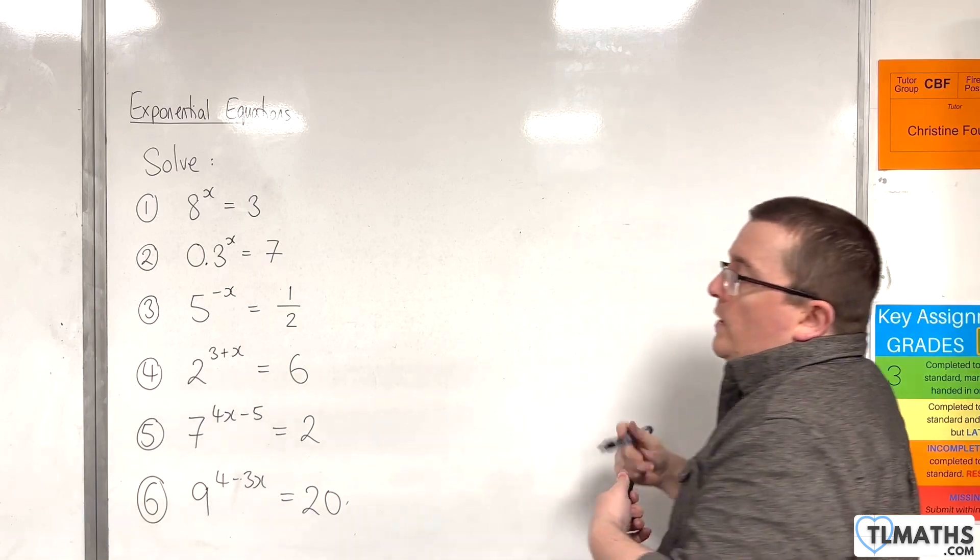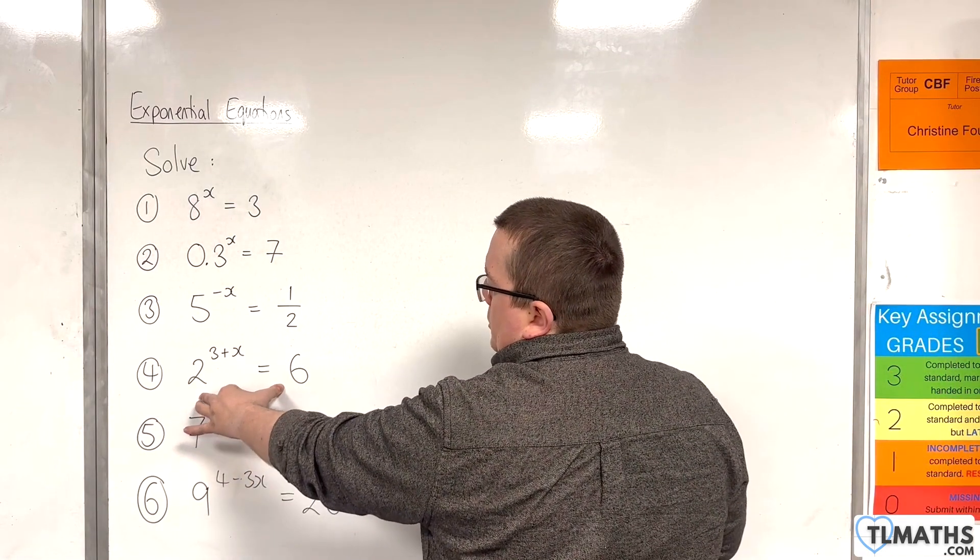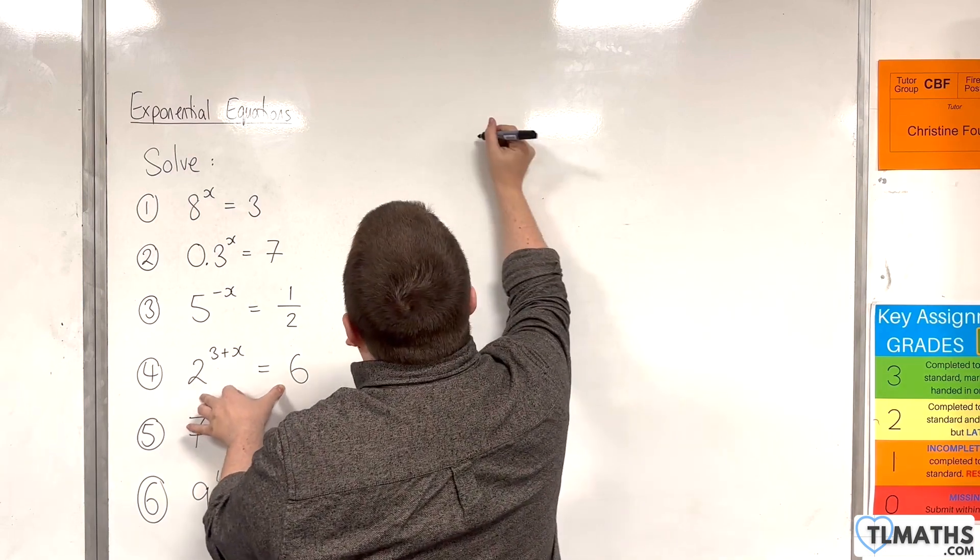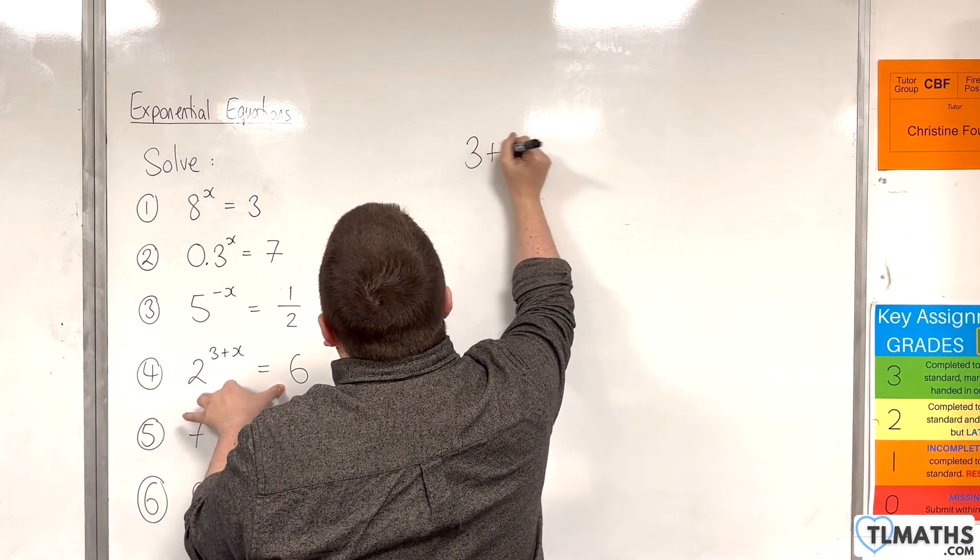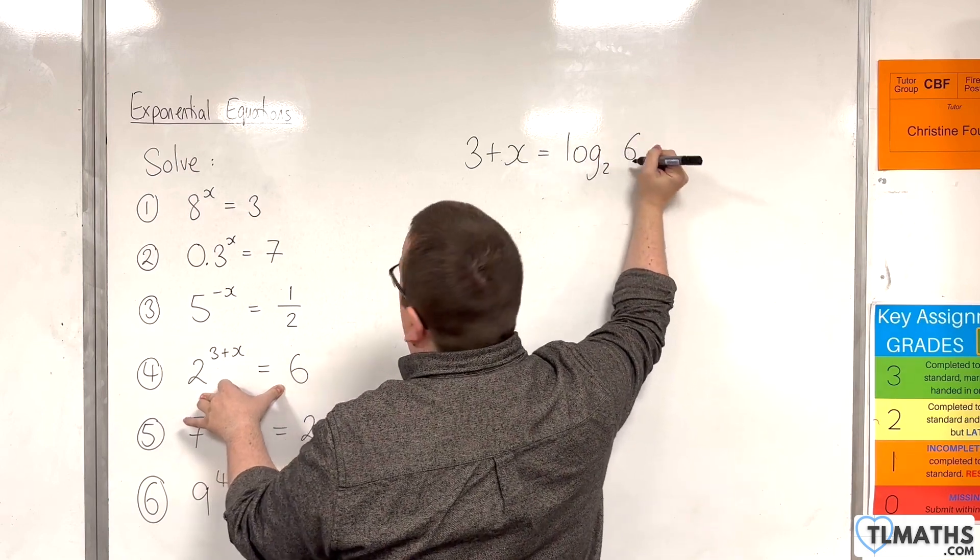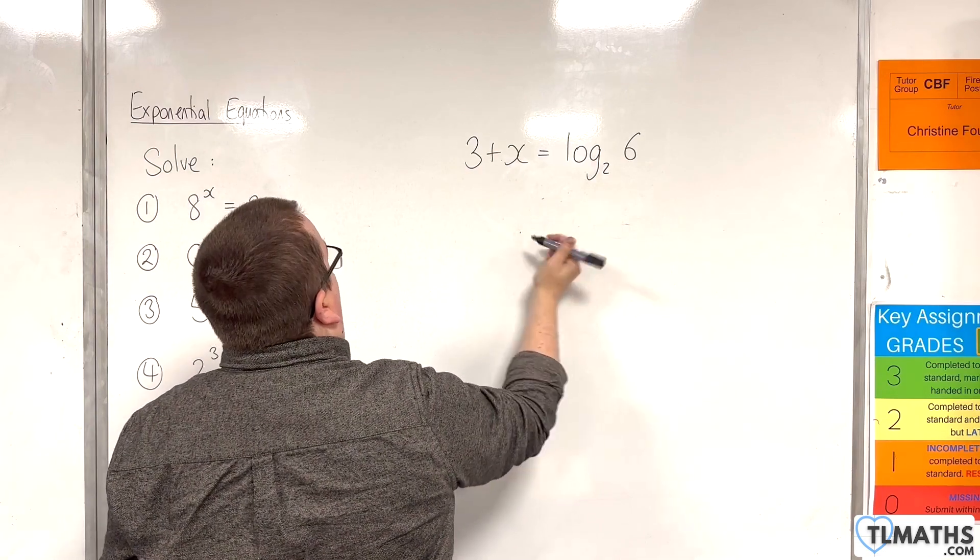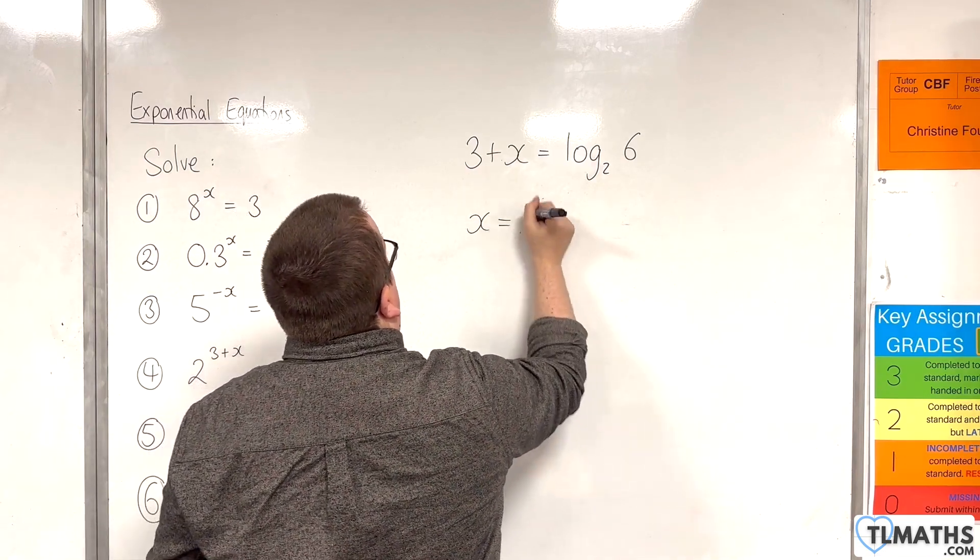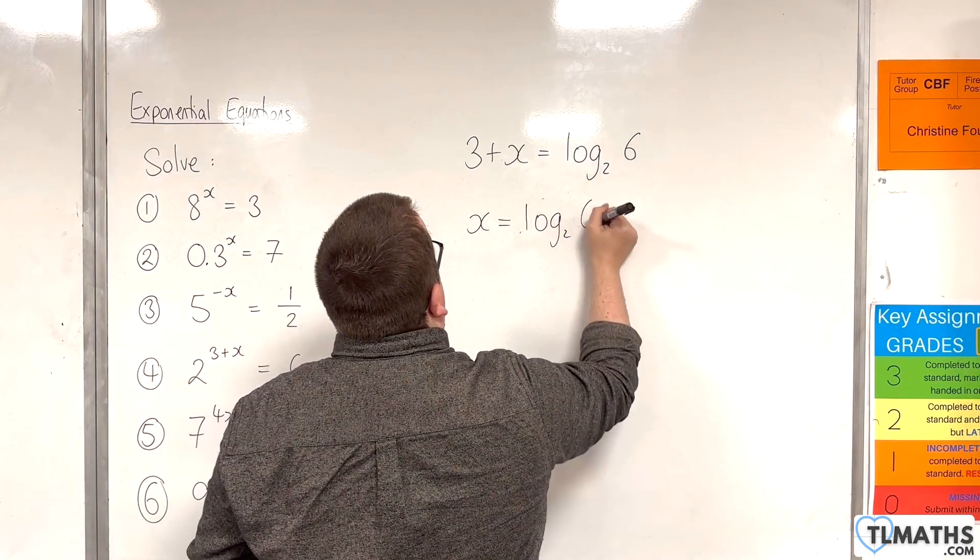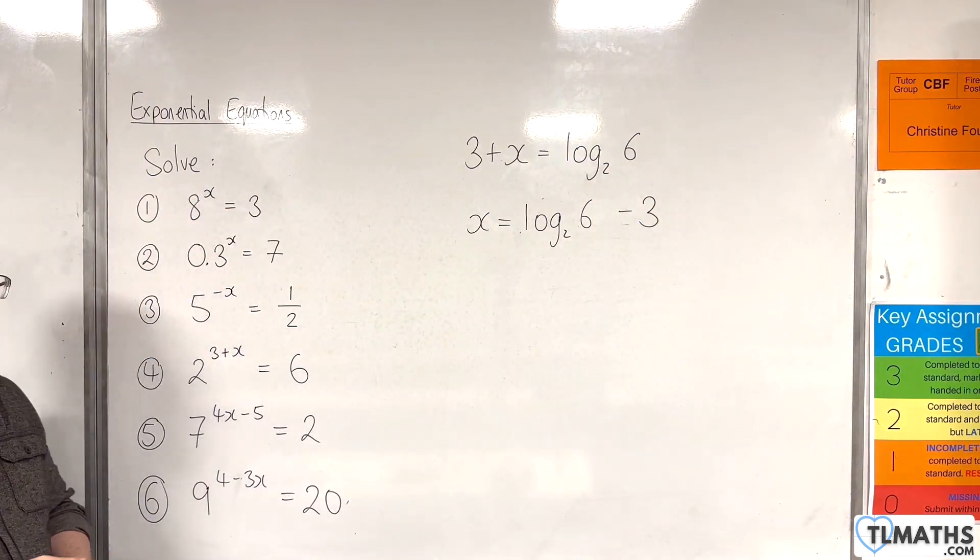Number 4, we have 2 to the power of 3 plus x is equal to 6. We can write that in logarithmic form by writing 3 plus x is log base 2 of 6. So then we can subtract 3 from both sides. So x is log base 2 of 6 take away 3. And that's our answer to number 4.